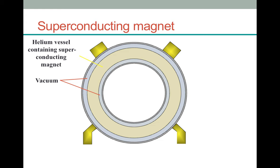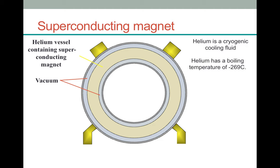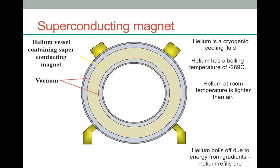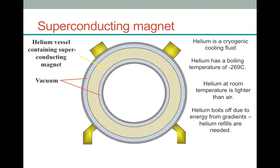The magnetic coil sits in liquid helium, which is used as a cryogenic cooling fluid. Helium at room temperature is lighter than air, which is why balloons filled with helium float to the ceiling. Helium has a boiling temperature of minus 269 degrees centigrade, which is needed to keep the magnet very cold. The gradients send energy into the machine to get the signal we're interested in, and the magnets heat up and a small amount of helium boils off. These magnets are very expensive because of the amount of helium they use — even when the MRI unit is doing nothing, it is still using up helium, although in very small amounts.